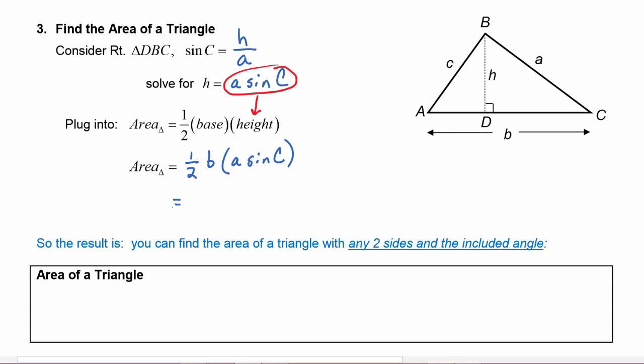Which is equal to one half. I'm just going to take these two letters and put them in alphabetical order: a, b, sine of C. Now let's look at the picture and see what that is. If we take sides a and b, then notice that C is the included angle between those two sides.